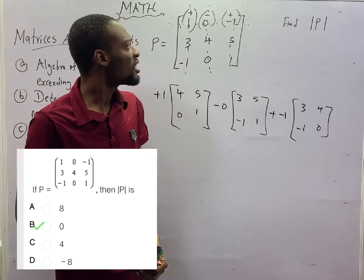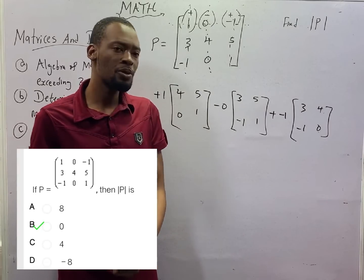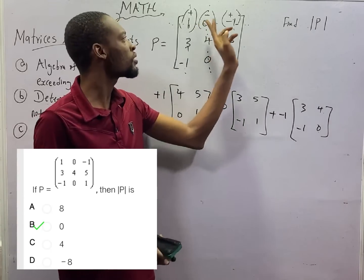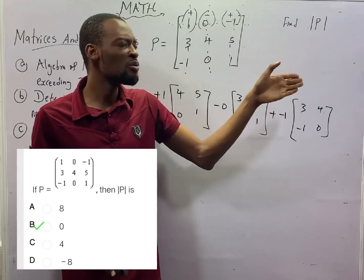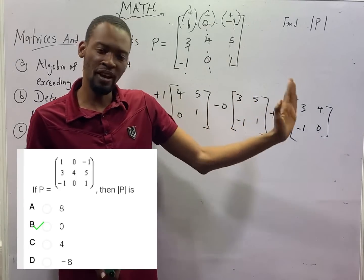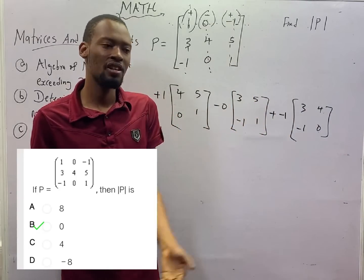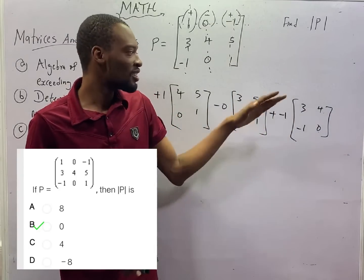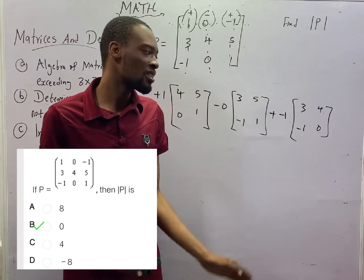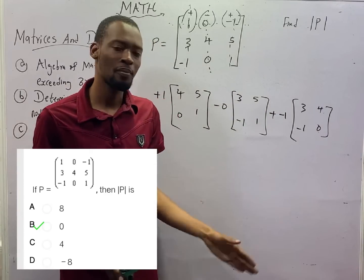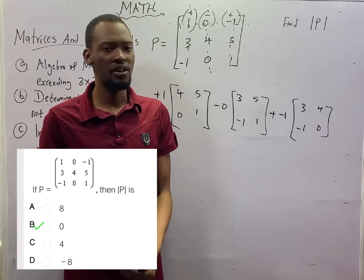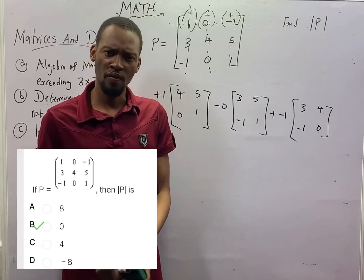If it were 4×4 matrices, you do plus, minus, plus, minus. Then with that, convert all of them to 3×3 matrices. From there, convert 3×3 matrices to 2×2 matrices, then you solve. But that is beyond the scope of this class.